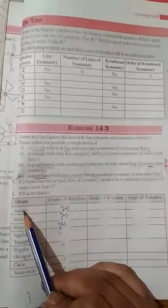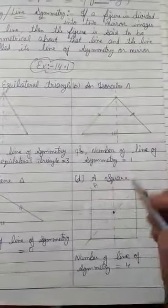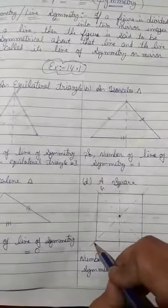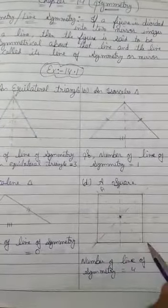Now, what is the order and angle of rotation? For a square, fix one point — rotating it, it comes back to the same position after four rotations. So the order of rotation of a square is four. To find the angle of rotation, divide 360 by the order: 360 ÷ 4 = 90 degrees. So the angle of rotation is 90 degrees.